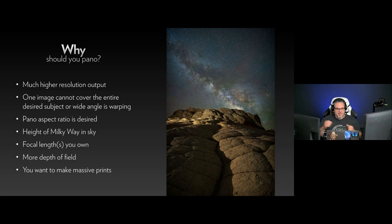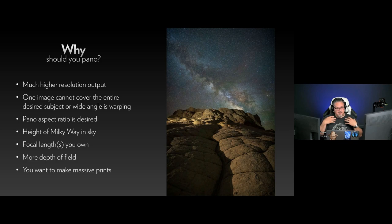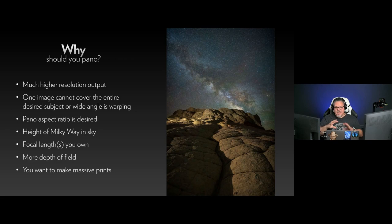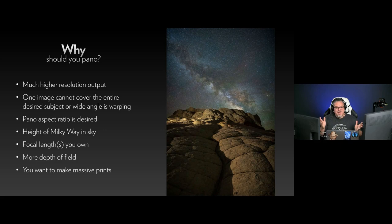If you try and take one image, you can't cover the whole area that you want — that's where panos were born. If the subject is warping at the edges, you might want to take multiple images to reduce the warping. You might like the pano aspect ratio, traditionally one to three or three to one. If you're taking pictures of the Milky Way, it gets up pretty tall as the night goes on, and you may need multiple pictures to get it in your frame with the landscape. I'm an astro landscape photographer — some people call it nightscaping. The focal lengths you own might not cover the area you want, and maybe you want more depth of field.